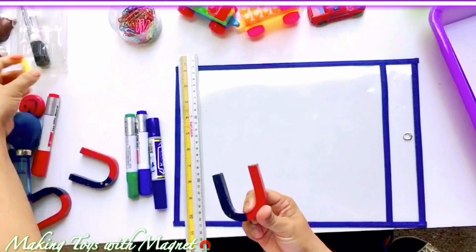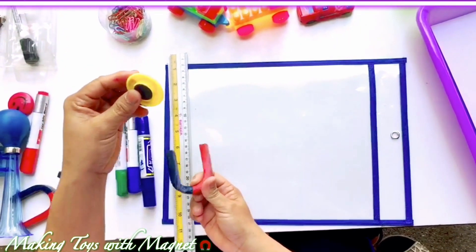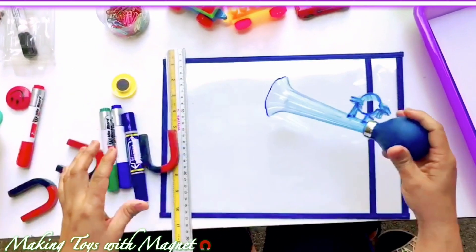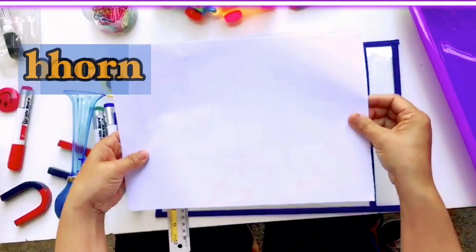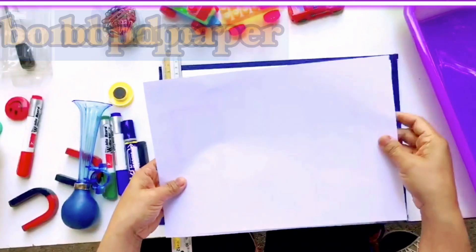Or you can use another magnet just like this one. We have this in a 20 baht store. And then of course this one. This is a board. And we need a white bond paper, just one.